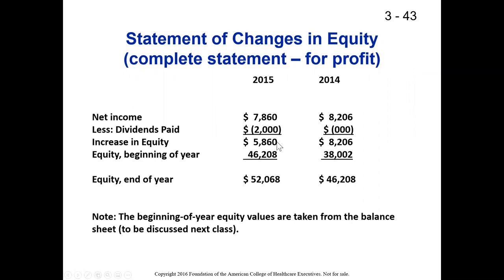Adding the $5,860,000 to beginning equity (which is last year's ending equity), just like a bank account where December 31st ending balance becomes January 1st beginning balance — $46,208,000 as beginning balance plus $5,860,000 gives us ending equity of $52,068,000.